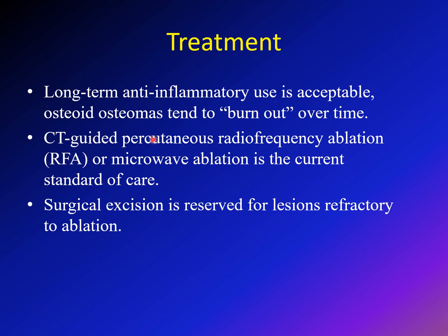The second line of treatment, which is most commonly used nowadays, is CT-guided radiofrequency ablation. In this procedure, a CT-guided probe is introduced to the nidus and radiofrequency ablation is done to kill the tumor. The third type is surgical excision, reserved for lesions that are refractory to ablation, or where the site is dangerous — for example, if the osteoid osteoma is very close to the spinal cord, or if it is subcutaneous and there is concern about skin complications.